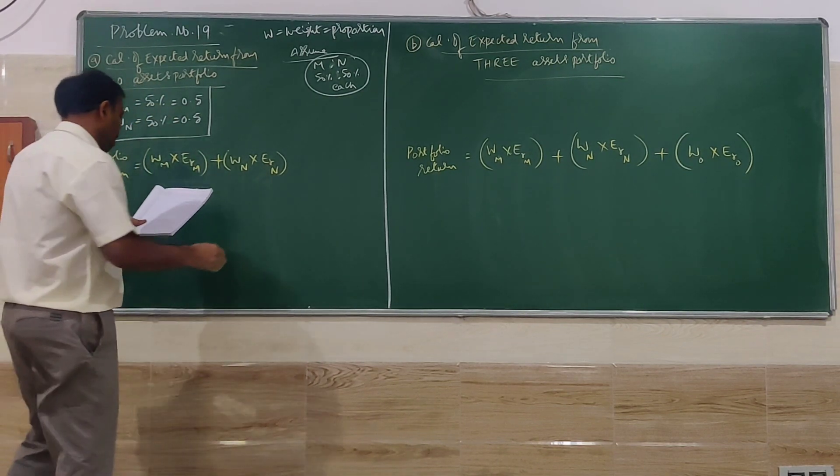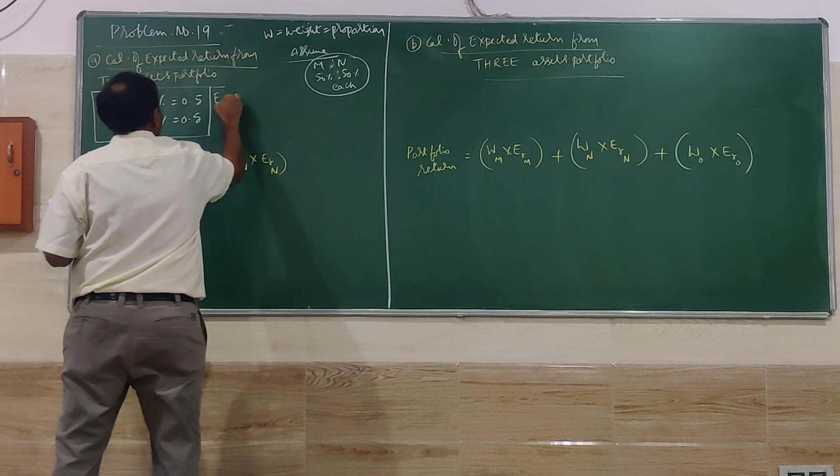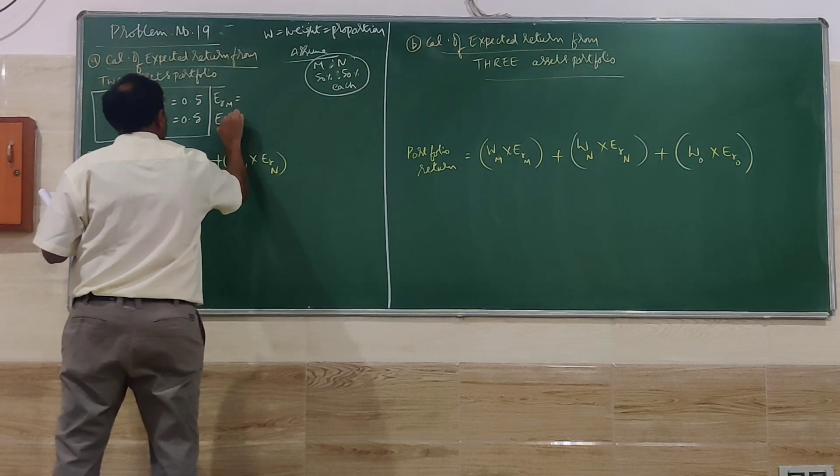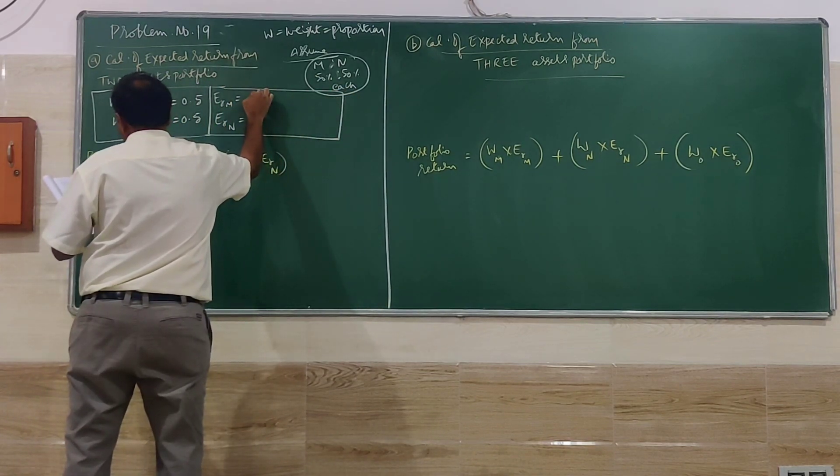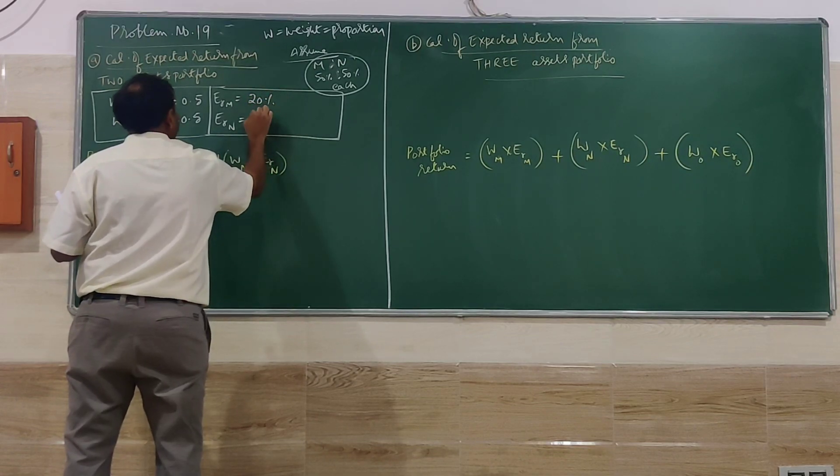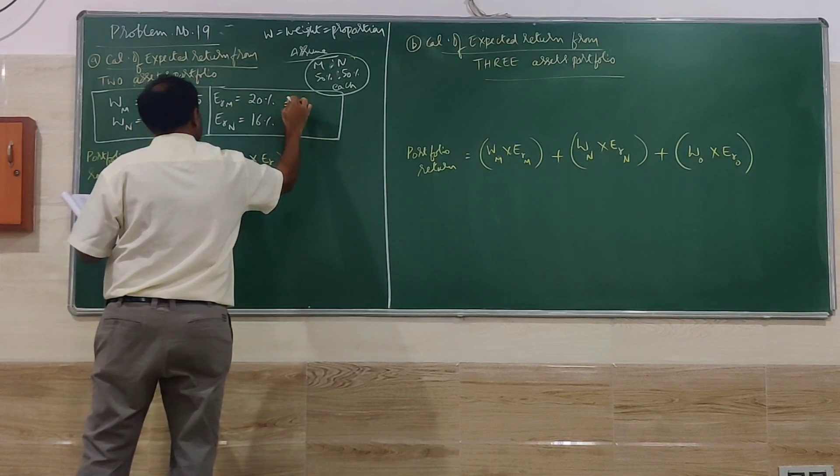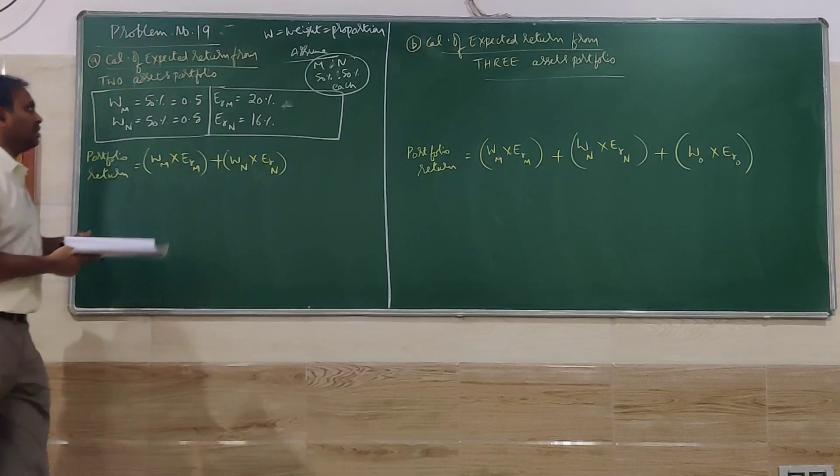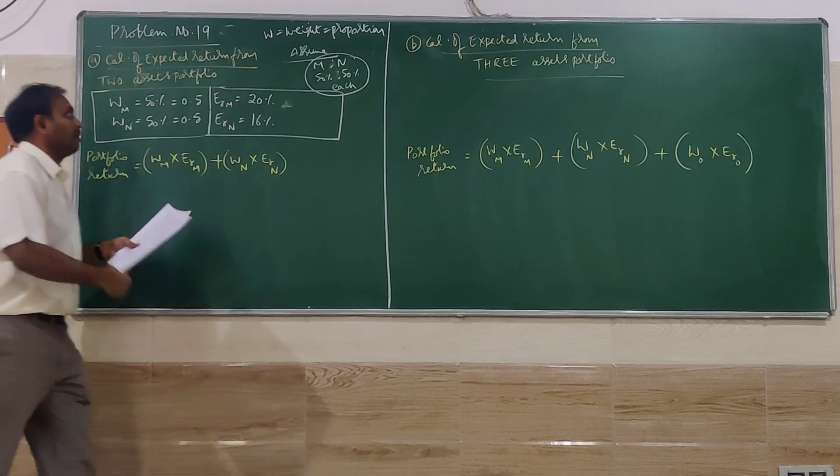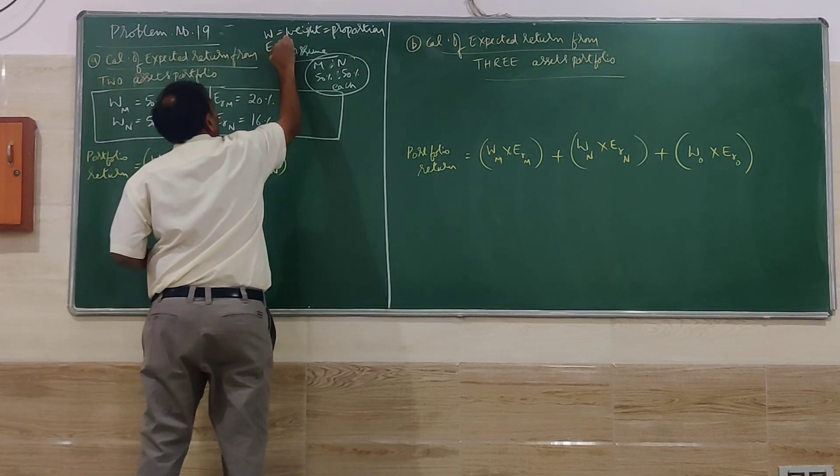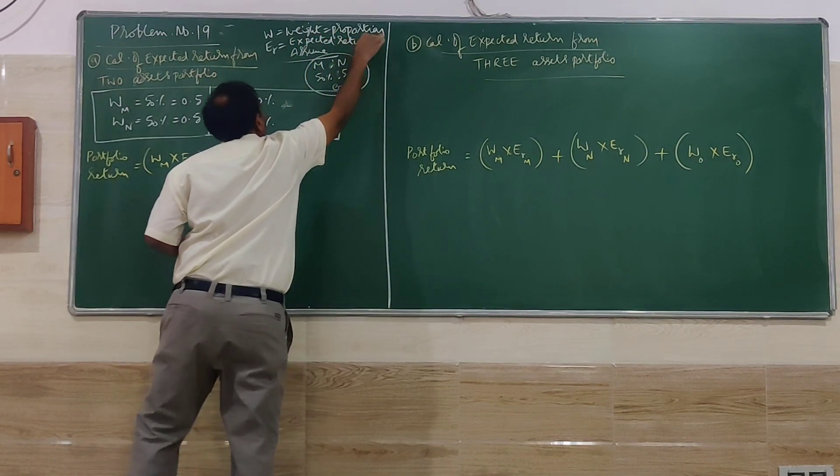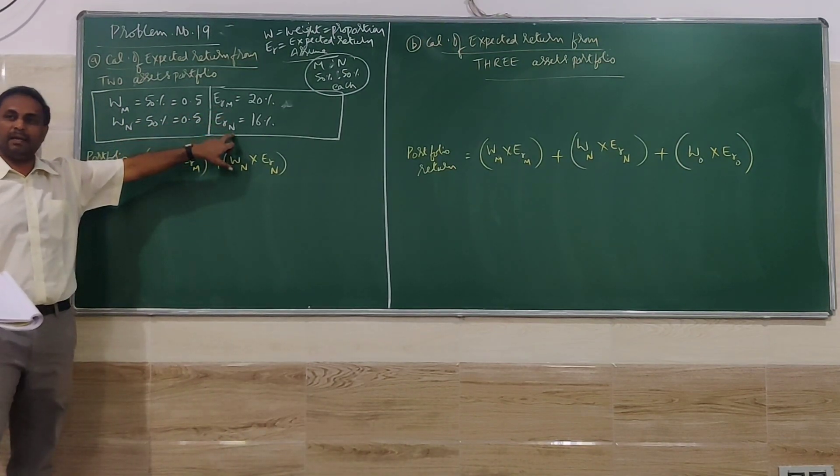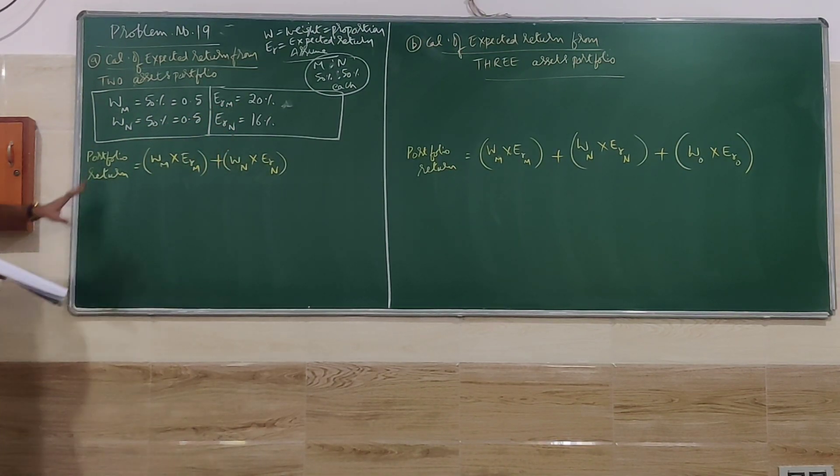Next, the expected return of M company stock and expected return of N company stock. They have given that M company has 20%, N company has 16%. So the expected return of M is 20% and expected return of N is 16%.